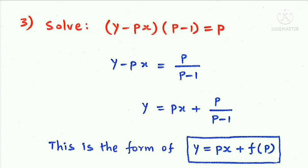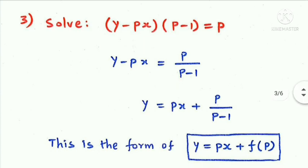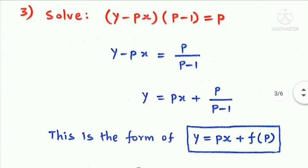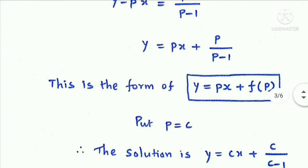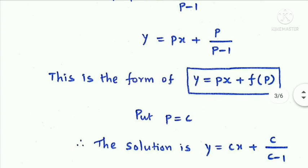This is in Clairant's form, y = px + f(p). The solution is y = cx + c/(c-1).